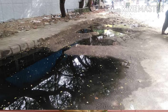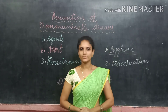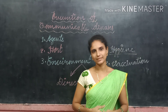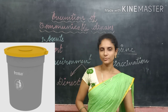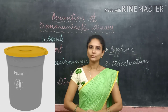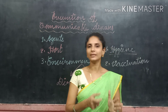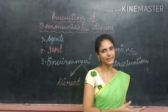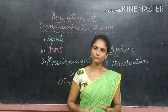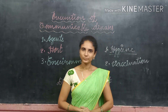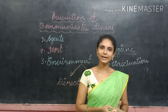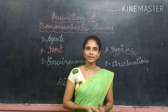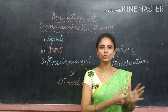Mosquitoes cause dangerous diseases like dengue and malaria. To prevent these, we should not throw garbage on the road — we must use covered dustbins, as uncovered dustbins also become breeding grounds for mosquitoes and flies. We must not leave sewage on the roads, and we should not spit on the road. Fresh air and sunlight are natural disinfectants, so clothes, linens, and articles should be exposed to sunlight regularly to kill germs.